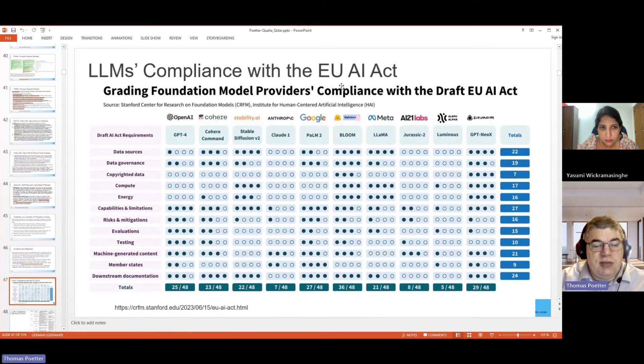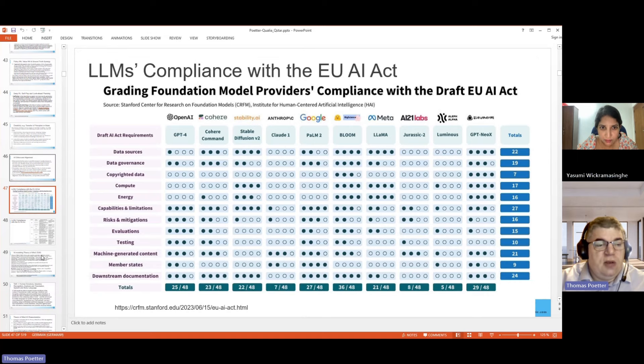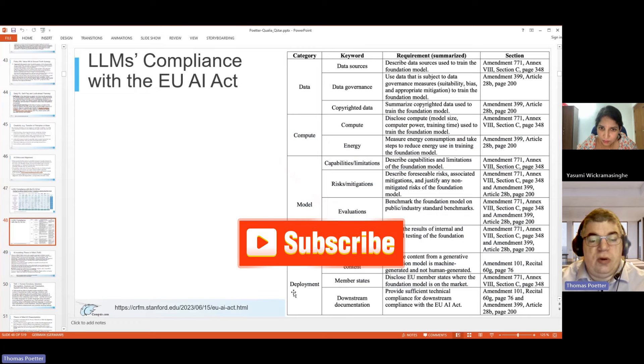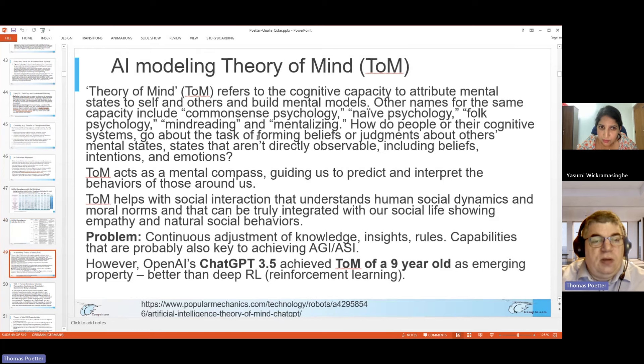And this is an interesting video that describes this. So then different AI acts have come out. One of the first was the EU AI Act, and we see that most models are not very compliant with it. Some only have eight out of 48, for example here, or even five. And even the best models are at around 20 or 36, 27 to 36 out of 48 points. So all not very compliant yet. And this is how compliance can be broken down into data compliance, compute, model, and deployment compliance. And then there's various regulations around this.